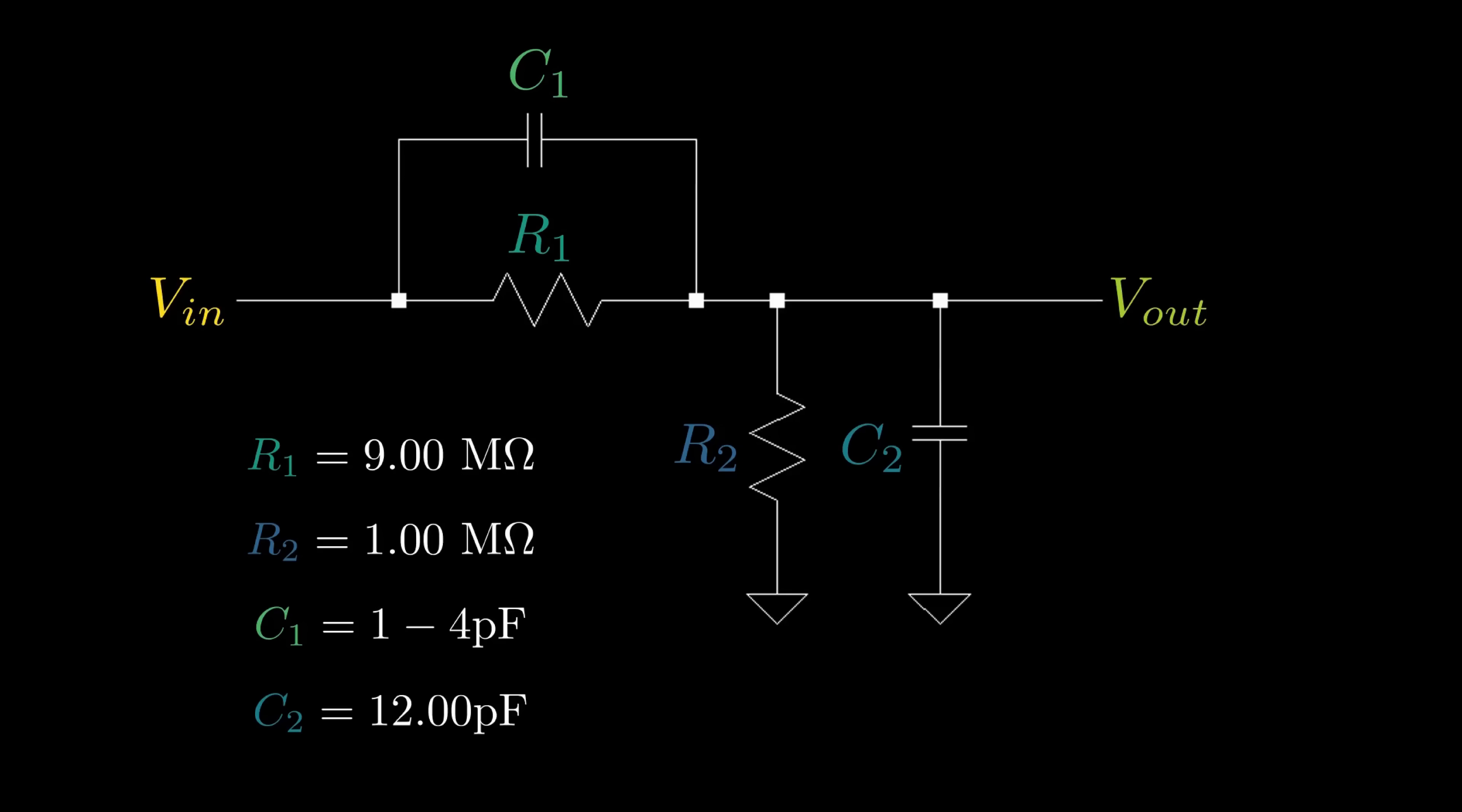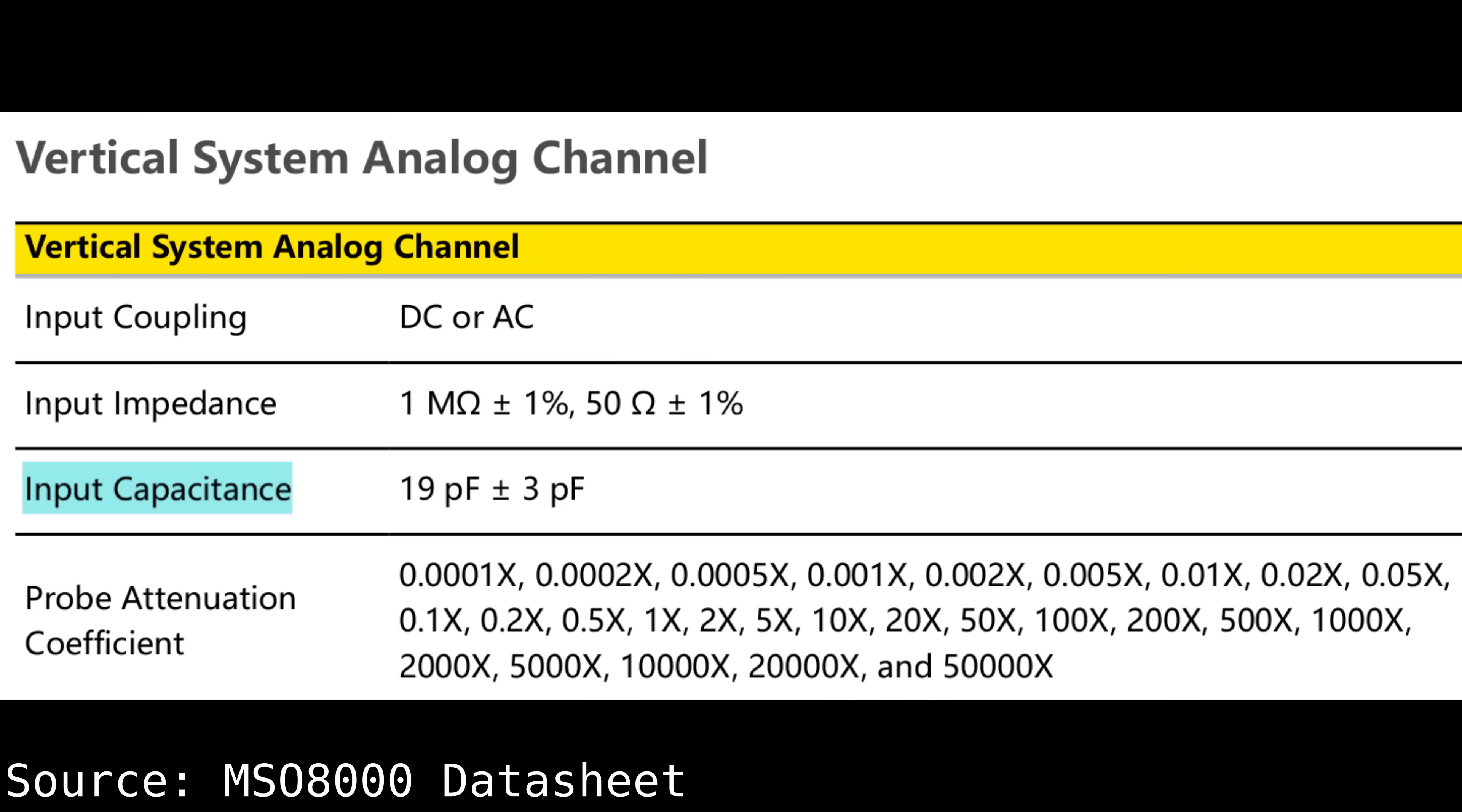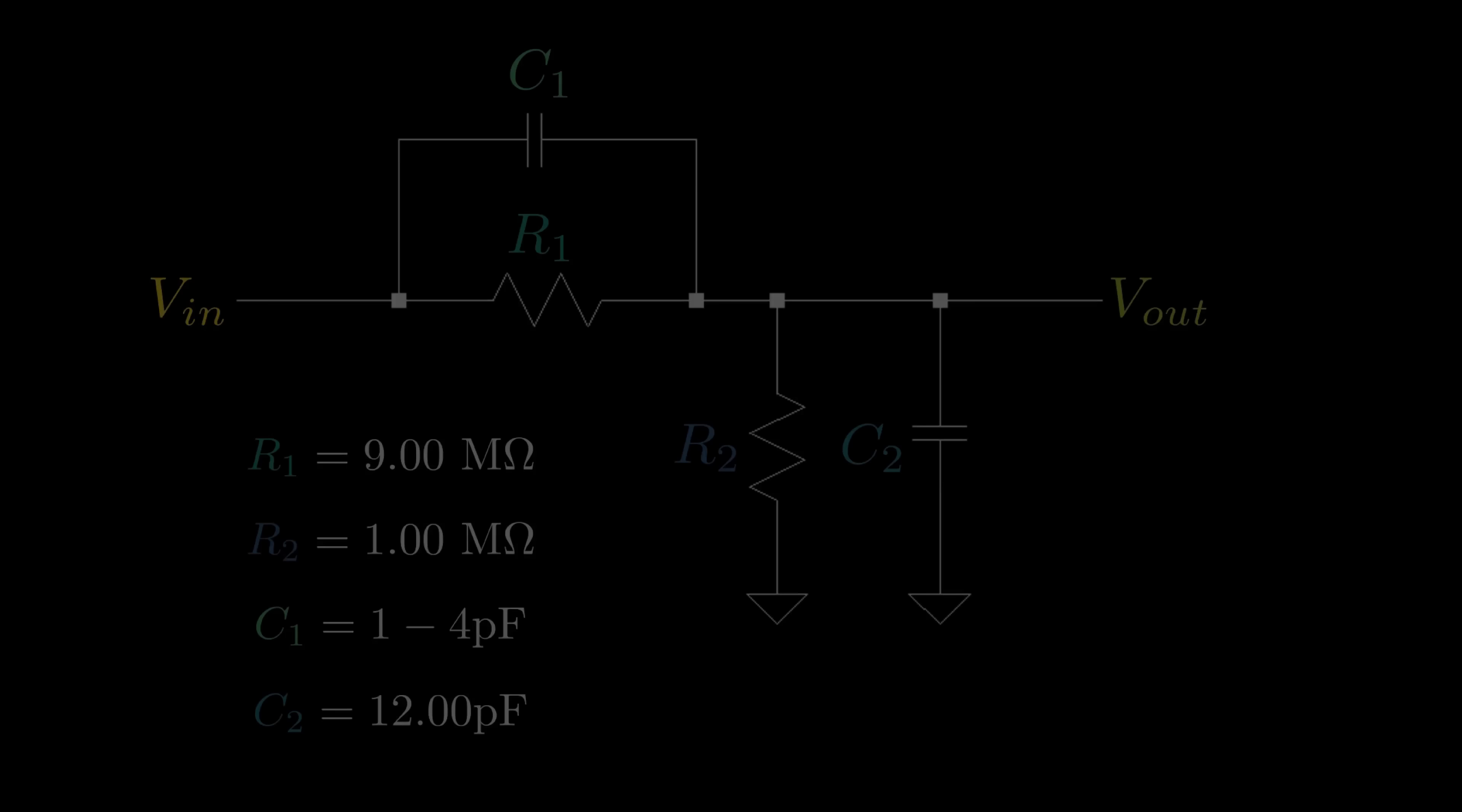Now, you may ask, why even have the capacitors in the first place? If you had just the resistors, there is no high frequency roll off. While this is true, the capacitance C2 is something inherent to the oscilloscope front end. No matter what, there is always some parasitic capacitance to ground at the input of the oscilloscope. C1 is an intentionally placed variable capacitor that allows the user to tune the probe's frequency response. And if C1 is tuned correctly, C2 no longer causes high frequency roll off.